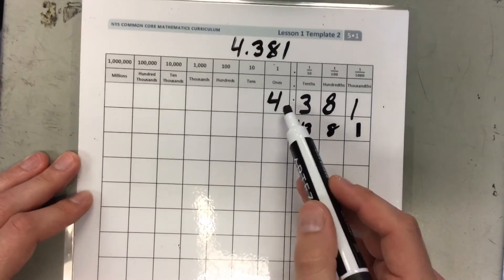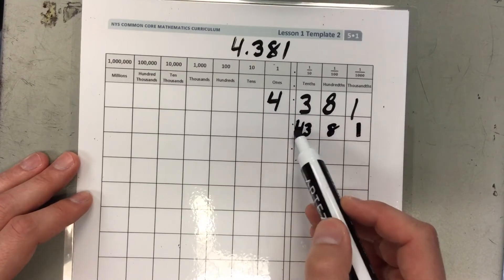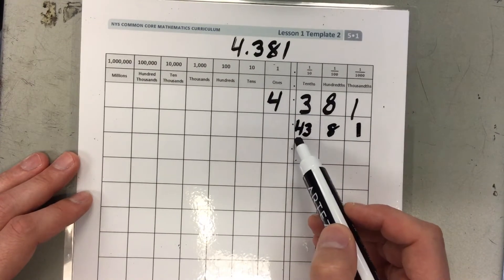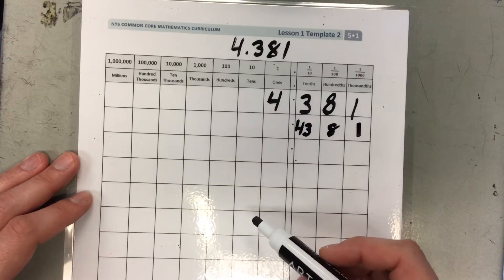And I would still have 8 hundredths and 1 thousandth. So when I'm breaking this down, you can think about when I'm using the greatest number of tenths, I'm just moving this 4 backwards. That really represents 40 tenths. And then I'm using my 3 as well.